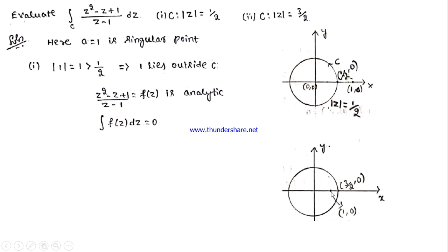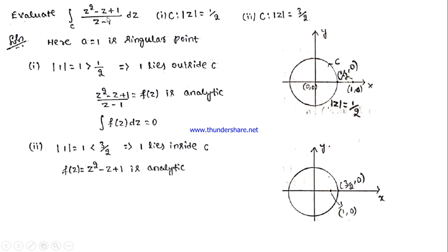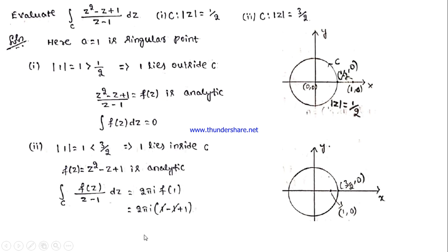For the second case, since 1 lies inside C, f(z) = z² − z + 1 is the analytic function (the numerator). This is of the form ∫ f(z)/(z − A) dz. By Cauchy's integral formula, the answer is 2πi·f(1). Substituting z = 1: f(1) = 1 − 1 + 1 = 1. So the answer is 2πi.